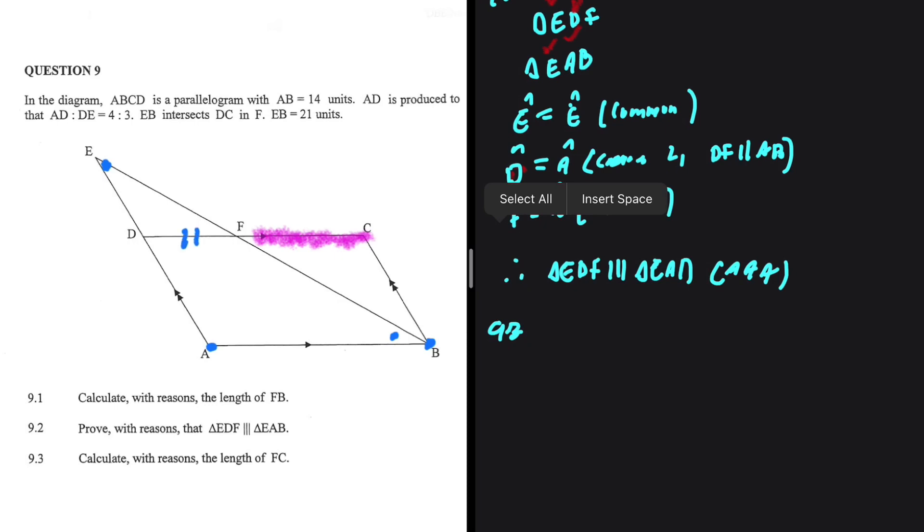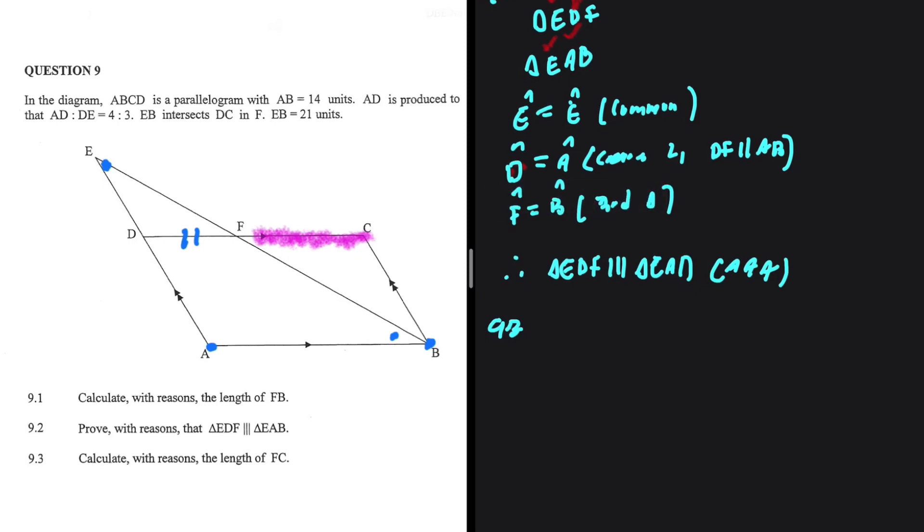DF. If we can find the DF, then we're going to have FC because AB should be equal to DC if ABCD is a parallelogram. So how can we find DF? Let me show you what we're going to do.